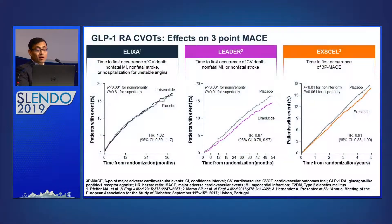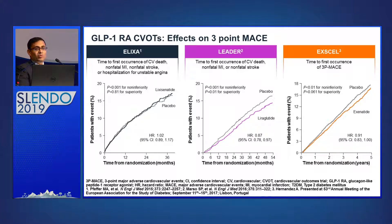This is a summary of trials with DPP-4 inhibitors. The SAVOR trial with saxagliptin showed non-inferiority compared to placebo. EXAMINE with alogliptin showed the same results, and TECOS with sitagliptin again showed non-inferiority. Coming to injectable GLP-1 analogs — the ELIXA trial with lixisenatide and the EXSCEL trial with once-weekly exenatide both showed non-inferiority. The LEADER trial, however, showed a significant around 13 percent reduction in risk of MACE when liraglutide was added.